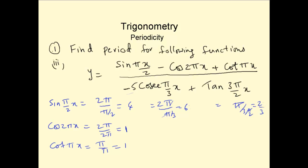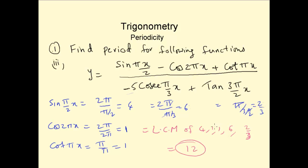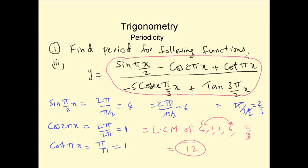The period for the whole function — sin(πx/2) and so on — is the LCM of 4, 1, 1, 6, and 2/3. The LCM of 4 and 6 is 12, and everything else is a multiple of that, so the LCM is 12. Therefore, the period for this whole function is equal to 12.